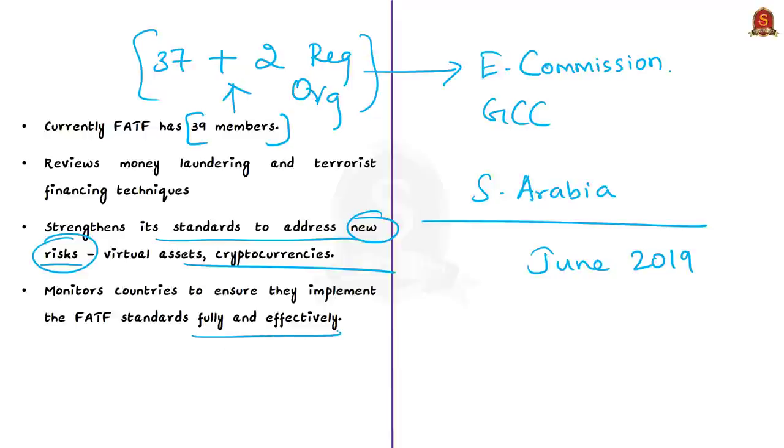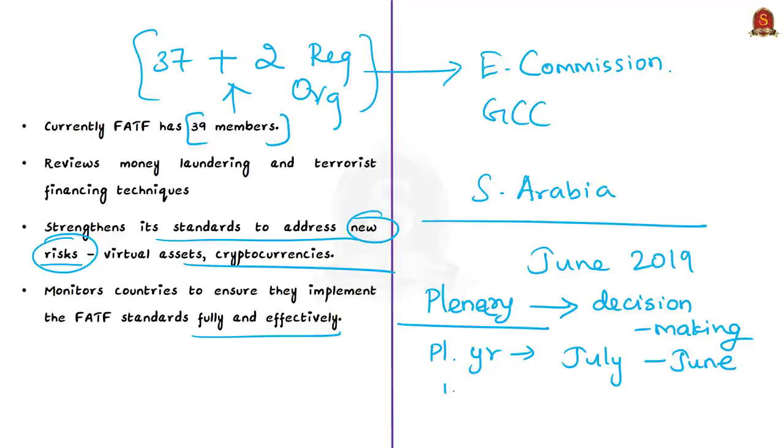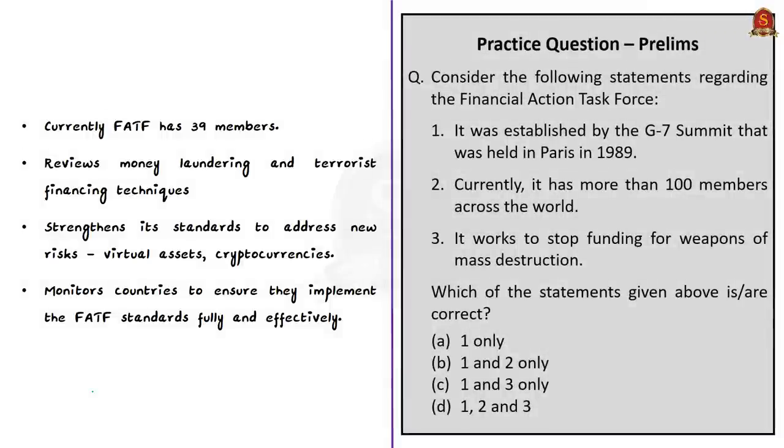FATF continuously strengthens its standards to address new risks, for example the regulation of virtual assets and cryptocurrencies. It monitors countries to ensure they implement FATF standards fully and effectively, and holds countries to account which do not comply. Plenary of FATF is very important as decisions related to blacklisting, greylisting, or removing from these lists are taken at plenary sessions. FATF plenary year begins in July and ends in June. In a plenary year, FATF holds three plenary meetings usually in October, February, and June. These plenary meetings are not open to the public, only open to delegations from FATF members, observer jurisdictions, and observer organizations.